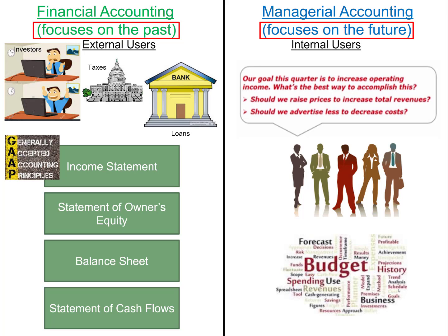A big tool that managers use to make goals and measure performance is the budget. A budget shows the expected financial impact of decisions, such as offering a new menu item or building a new factory, and helps identify the resources needed to achieve these goals. Later, they compare actual results with the expected results in the budget. Managerial accounting does not have to follow GAAP — managers do the accounting any way they deem necessary to better plan and control operations.